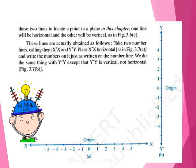We use these two lines to locate a point in a plane. In this chapter, one line will be horizontal and the other will be vertical. The horizontal line is known as X′X and the vertical line is known as Y′Y.